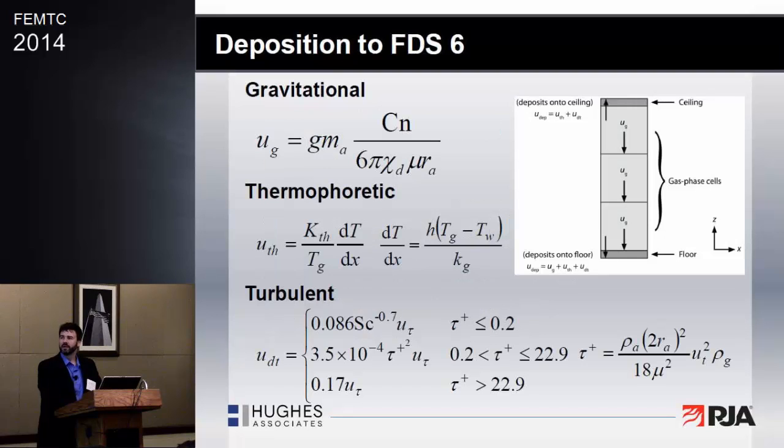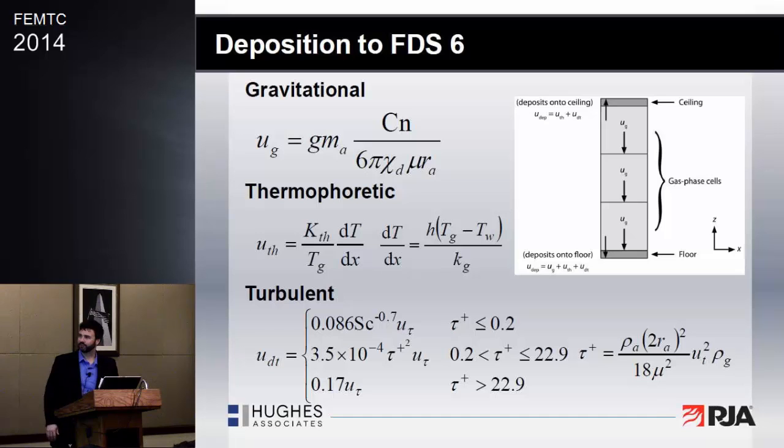So what we did is we added some simple deposition routines to FDS. These were based on work done back in the 1960s by the nuclear industry — a couple of codes, Victoria and Charm, that were looking at radionuclide aerosols from power plant accidents. They did a lot of work developing these engineering models back when there was really only hand calculations and large mainframes with not much horsepower.